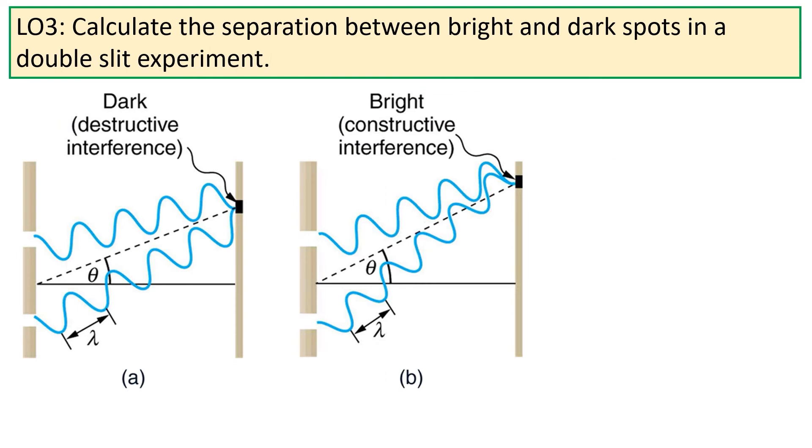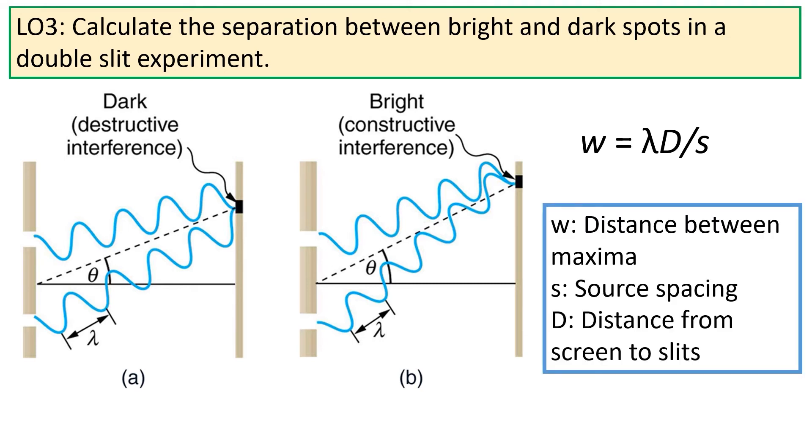Finally today, we're going to introduce the equation for calculating the separation between the bright and dark spots in a double slit experiment. In the double slit experiment, w = λD/s, where w is the distance between the maxima in the interference pattern, s is the distance between the slits or the source spacing, and D is the distance from the slits to the screen onto which the interference pattern has been projected.